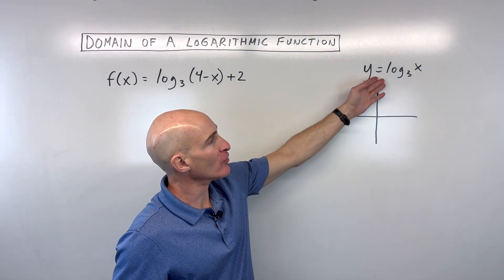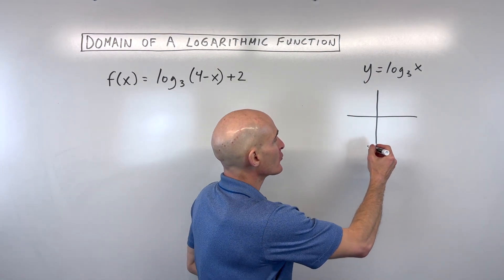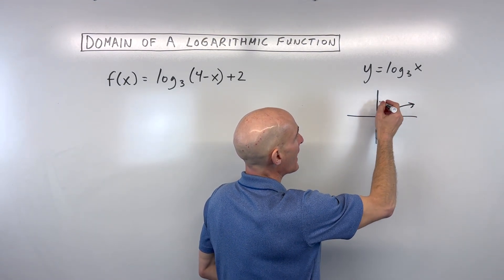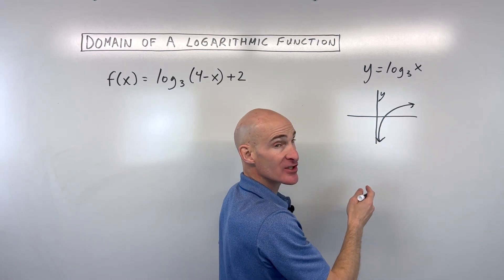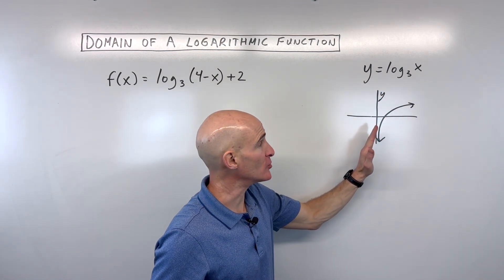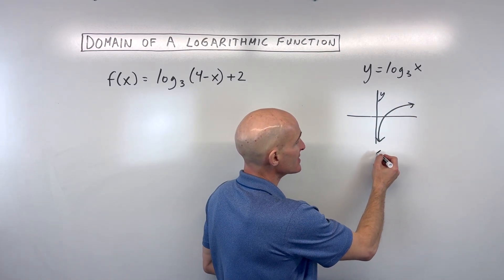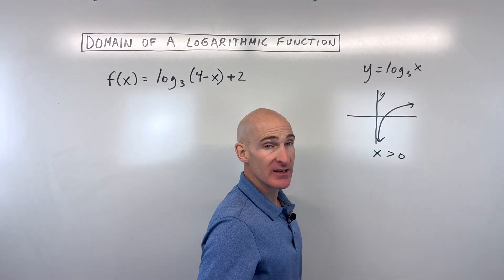You probably remember when you learned how to graph logs that you get a graph that looks something like this, where it's approaching the y-axis but it doesn't touch, it doesn't cross. This is like a vertical asymptote. And you notice that the graph is to the right of the y-axis, or you could say x is greater than 0.